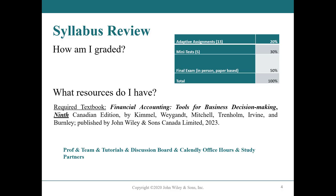Grades to students are like paychecks to professionals — we like to be acknowledged for hard work. So what is the remuneration in this course? You have 13 adaptive assignments, and your two lowest marks — including non-attempts — equal 20%. You will have five mini tests throughout the term and you get to drop one — those make up 30%. Your final exam is in-person, paper-based in December during the exam period, worth 50%. You have to pass the final exam in order to pass the course.